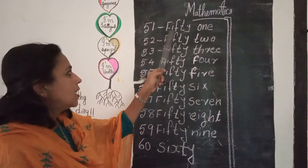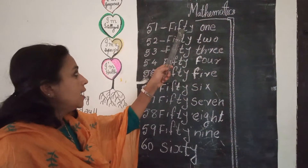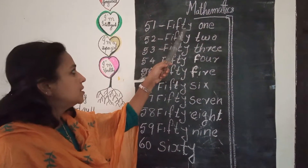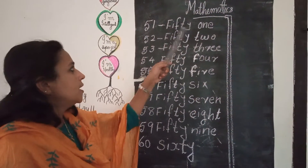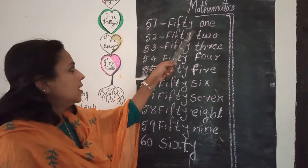51 — spelling: F, I, F, T, Y, O, N, E. Fifty-one.